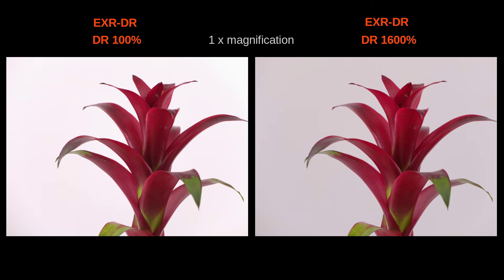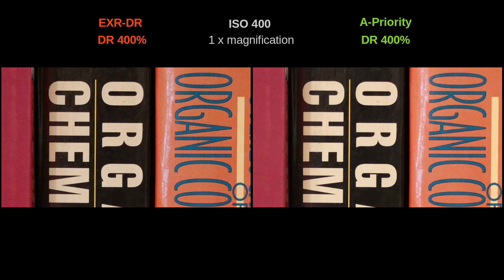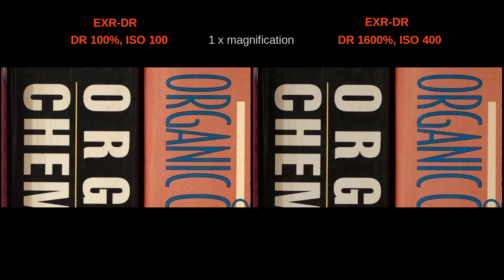The shadow details look much better with DR1600. Comparing noise for two DR methods at 400% and ISO 400, they look really the same. The EXR DR function produces only a 6MP photo while aperture priority makes a 12MP photo. Putting EXR DR100% at ISO 100 next to EXR DR1600 at ISO 400, the DR1600 photo has more noise but it's not bad at all. Where is all the terrible noise I expected? Is Fuji applying some smoothing function here?